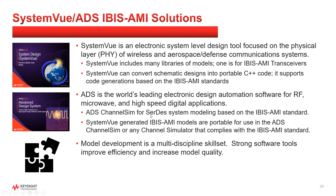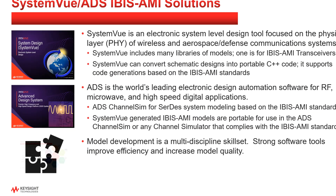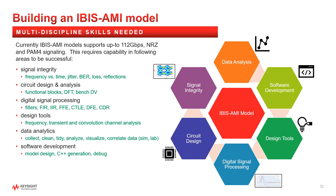I want to mention that model development relies on a breadth of skills. If you take a closer look at some of the challenges of building IBIS-AMI, you'll see it goes beyond software development. Currently, IBIS-AMI has been shown to support PHY models up to 112 gigabits per second at NRZ and PAM-4. This requires understanding in signal integrity, DSP, circuit design, data analytics, and of course some software development. Having strong software tools allows you to work faster while effectively managing these areas to achieve high quality results.